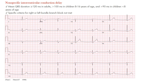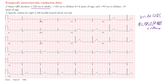So, nonspecific intraventricular conduction delay — the key thing to know is that this is essentially a wide QRS that does not meet left bundle branch block or right bundle branch block criteria. The QRS duration must be at least 120 milliseconds in adults, 100 milliseconds in those aged 8 to 16, and over 90 milliseconds in those under age 8.